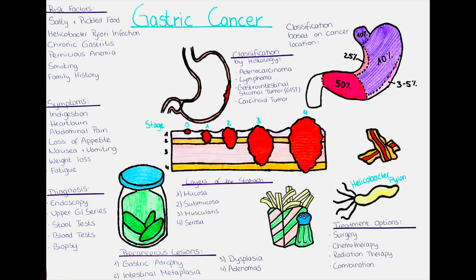How can we treat gastric cancer? Treatment options for gastric cancer depend on the stage of the cancer and may include surgery, chemotherapy, radiation therapy or a combination of these treatments. Surgery is often the preferred treatment for early-stage gastric cancer and may involve removing part or all of the stomach. In more advanced cases, chemotherapy and radiation therapy may be used to shrink the tumor before surgery or to slow the progression of the cancer if surgery is not an option.